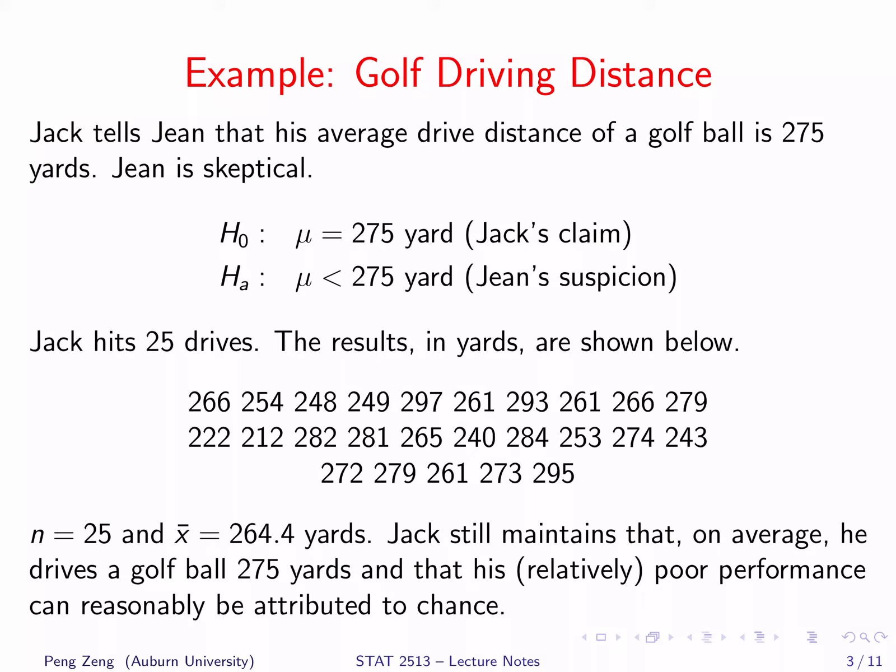There are several possible reasons that the sample mean is smaller than 275 yards. First, the population mean is indeed smaller than 275 yards — of course, Jack will not agree on it. Second, it is due to random chance. Although the sample mean is less than 275 yards, there are indeed some distances larger than 275 yards. If Jack hits another 25 drives, it is possible that the sample mean is larger than 275 yards. If we can rule out the possibility of the second scenario — that is, if the small sample mean is not due to random chance — we will tend to reject H0 and claim that Jack's mean drive distance is smaller than 275 yards.